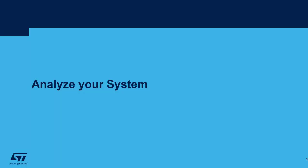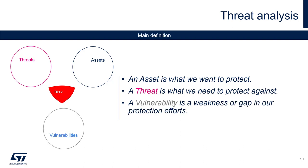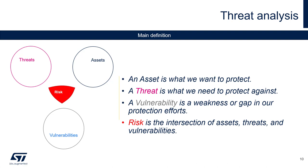Let's start with some definitions for the threat analysis. The asset is what you want to protect — it could be your device, your code, your brand, a location, whatever is valuable for you. The threat is what we need to protect against; a threat could damage your asset. A vulnerability is a weakness in your system — a threat could exploit a vulnerability to damage your asset. The risk is the intersection between your asset, your threat, and your vulnerabilities, and building strong security is to minimize this risk.